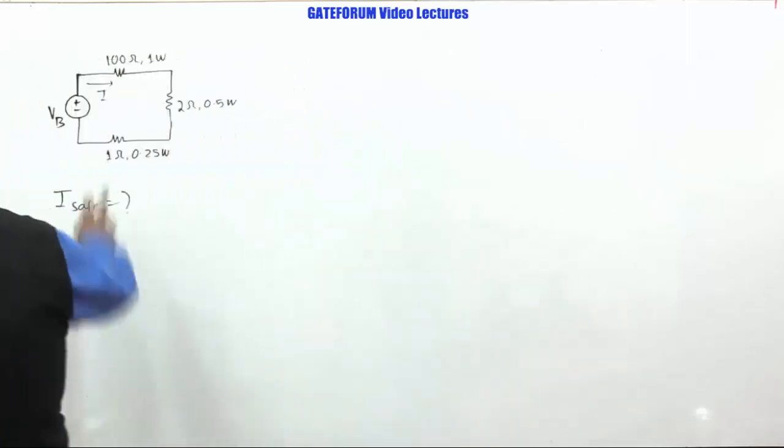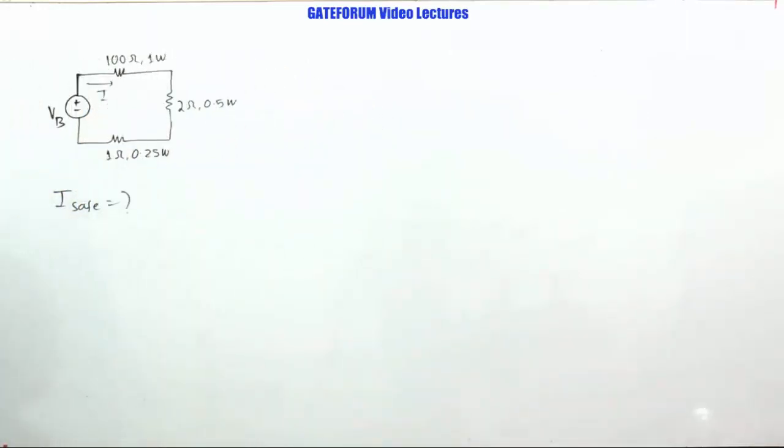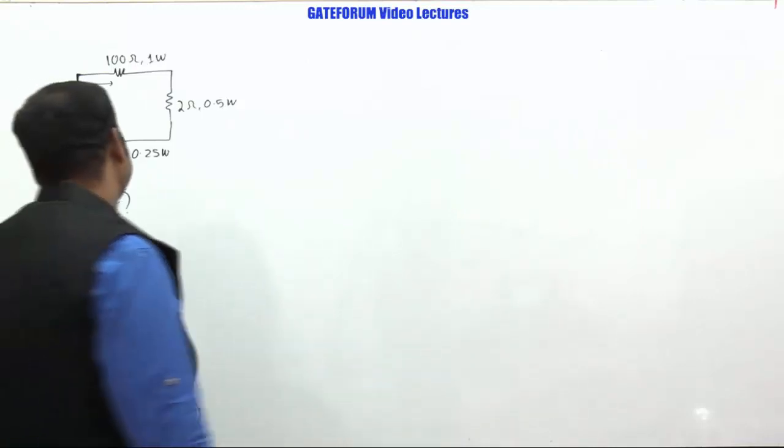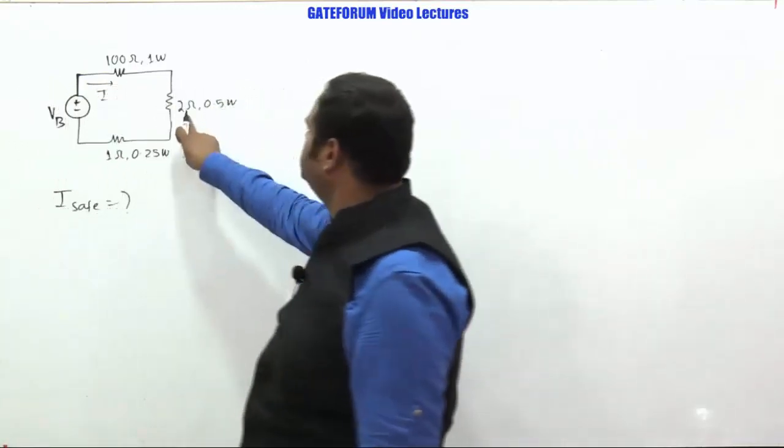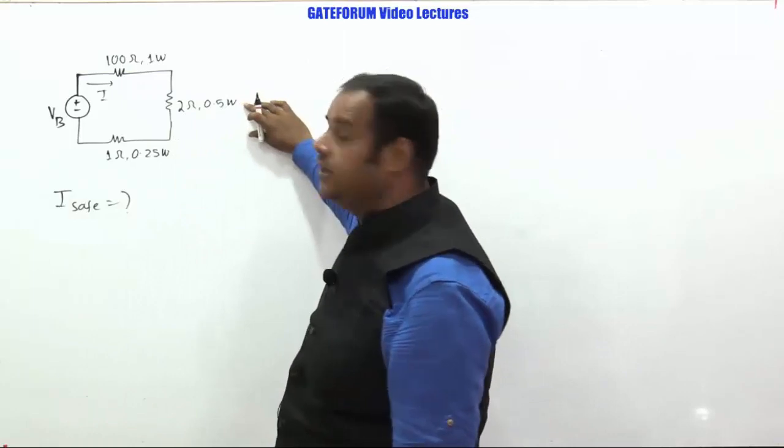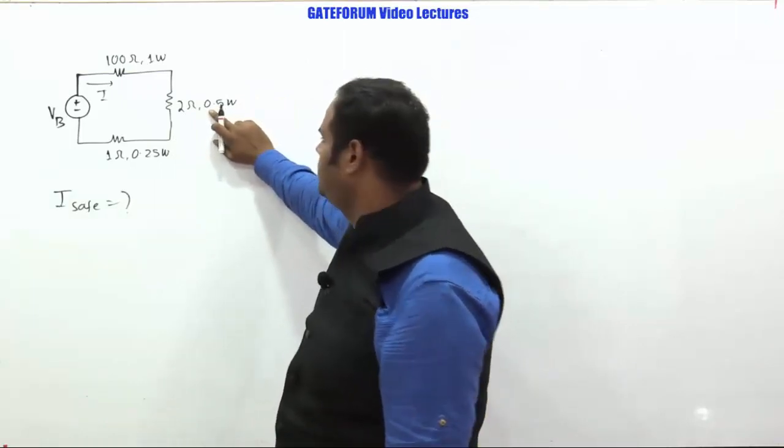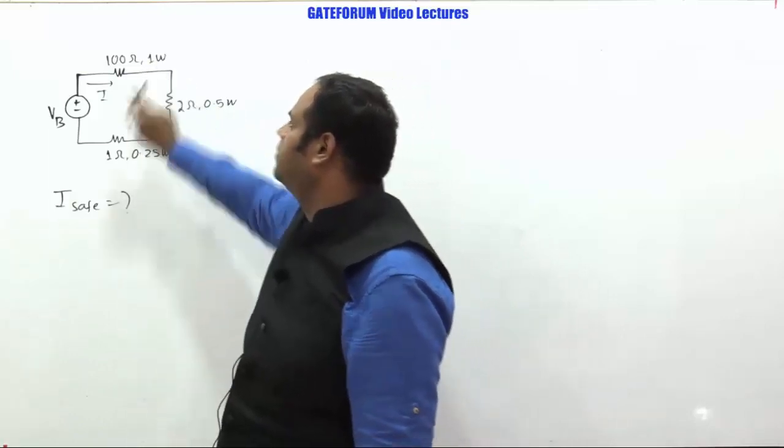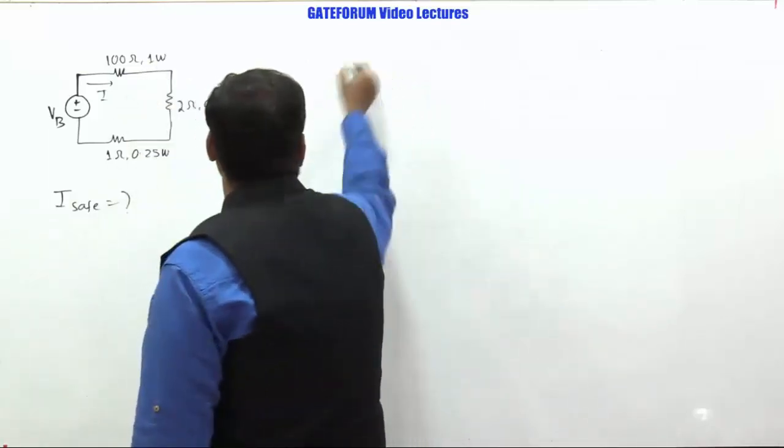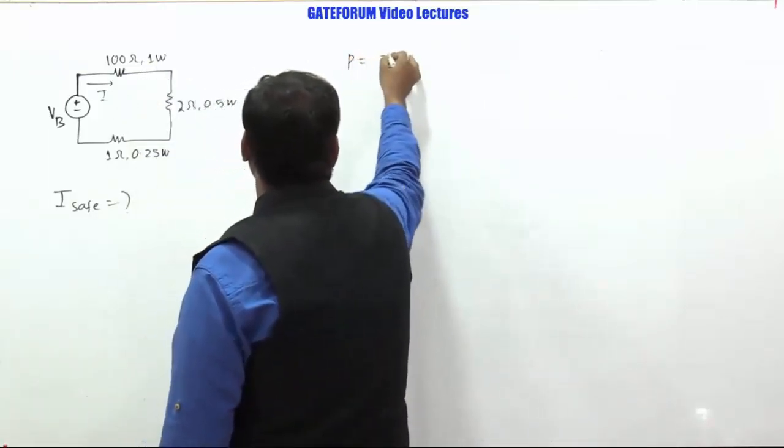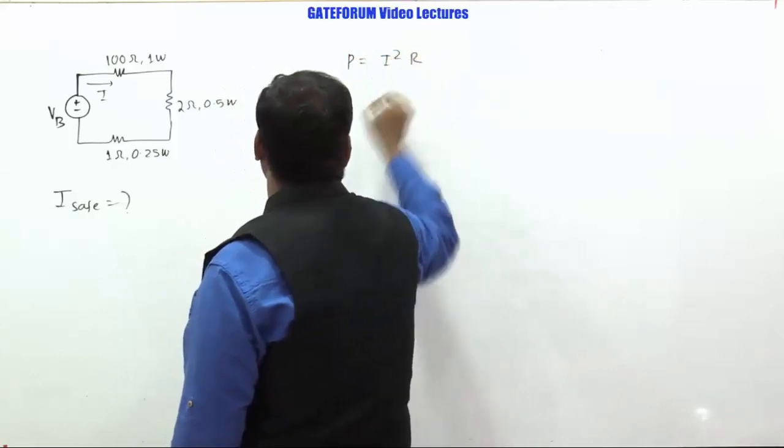We need to find the safe value of this current I. If you see this, there are three resistors and one source, and for each resistor, the value of resistance and the corresponding power rating is given. That means it can support up to 0.5 watt power, this can be up to 0.25 and this can be up to 1 watt. And because you know, power is related to resistance and current by relation I squared R.